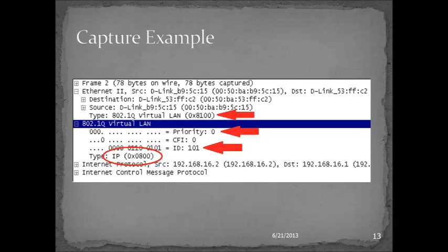Here is an 802.1Q tagged frame. The type field is now 8100, which tells all nodes involved in the transmission that 802.1Q tagging is being used. The second arrow shows the priority or prioritization field. Most important is the third arrow showing the VLAN tag — in this case, the VLAN ID is VLAN 101. The IP header type field that would normally be in the Ethernet frame is still there; it's just moved because we inserted the 802.1Q header. After the 802.1Q header, we have the indication that we are encapsulating IP, and from there on the frame is the same as we would expect without the tagging.